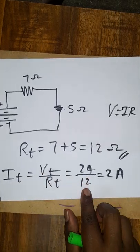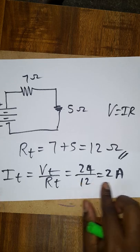Total current is I equal to 24 divided by 12. It is 2 ampere. The total current is flowing in the circuit.